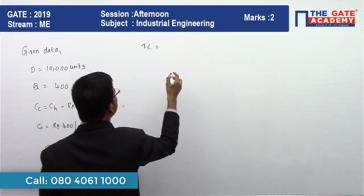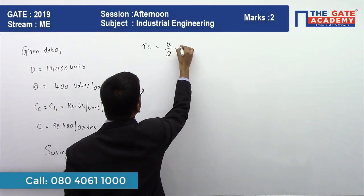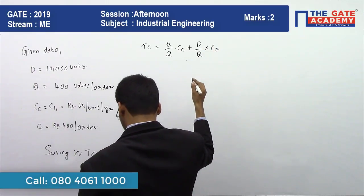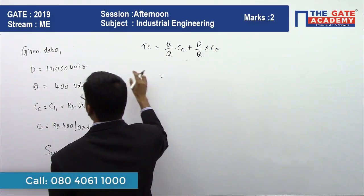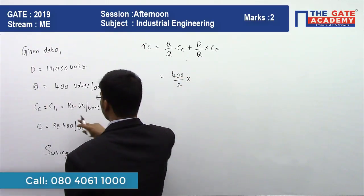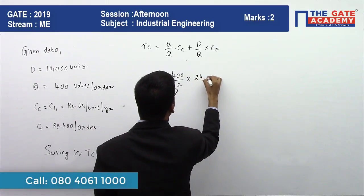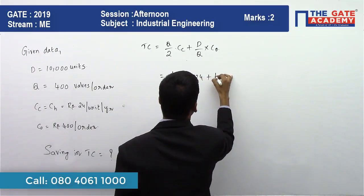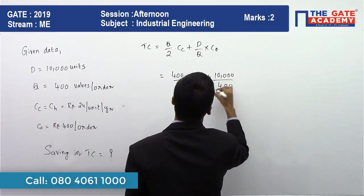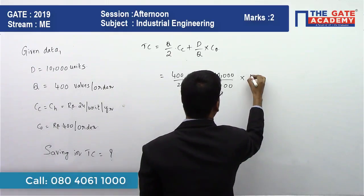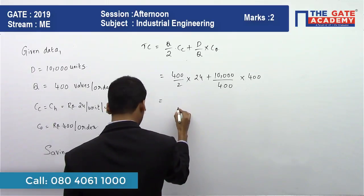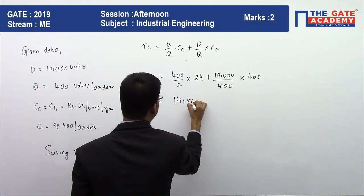Total cost equals (Q/2) × CC + (D/Q) × C₀. Substituting: (400/2) × 24 + (10,000/400) × 400. Simplifying, the total cost comes out to rupees 14,800.